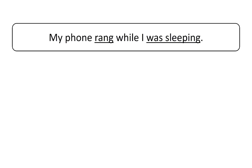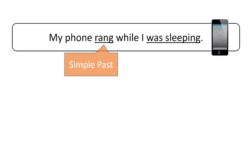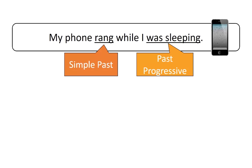To start out, take a look at the verbs in this sentence: 'My phone rang while I was sleeping.' Can you identify the tenses? Rang is in the simple past, and was sleeping is the past progressive. You may remember this from a previous lesson. You already know that it is possible to use these in the same sentence even though they are different tenses, and this makes sense because both of these actions are in the past.